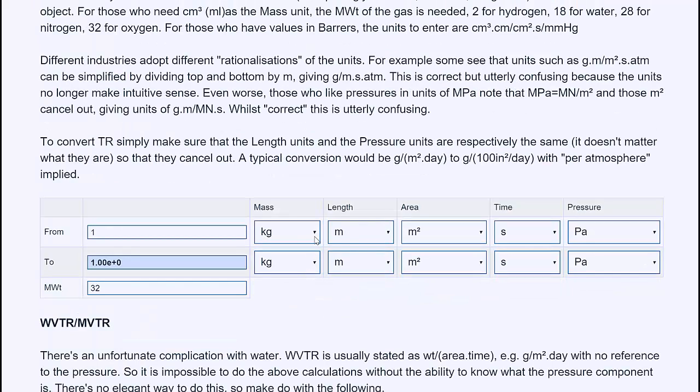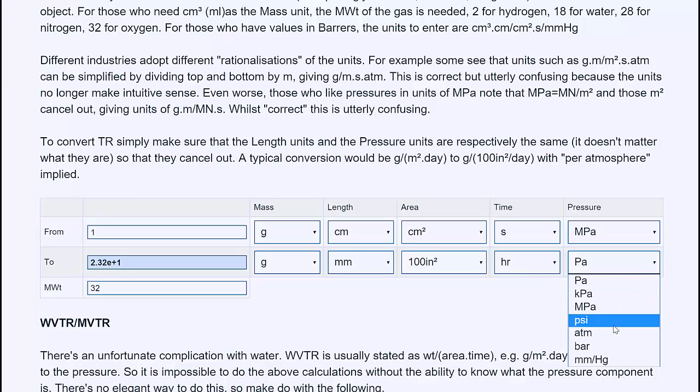So if you happen to want to be in grams, centimeters, centimeters squared, megapascals, and your American colleague wanted to be in grams, millimeters, hundred square inch, hours, and atmosphere, then you would have to convert your units to theirs by a factor of 2.35 times 10 to the sixth. This is a nightmare.